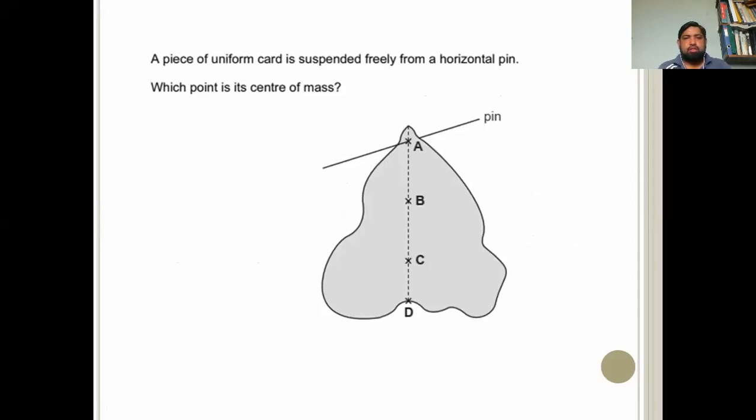A piece of uniform card is suspended freely from a horizontal pin. Which point is its center of mass? Now if this card is hanging freely and it's no more making any moments, not movement, it's not making any moments. So it means center of gravity has come under the pivot and it's not causing any moment now. So center of gravity can be A, B, C and D. Now A is point of suspension and it's one very extreme corner of the object. Same goes for D. So A and D cannot be the option for center of mass. B and C can be. Now you can identify where most of the mass of the object lies. So that seems to be the lower half of the object. So point C can be the center of mass of the object.